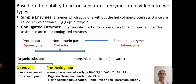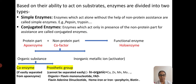Based on their ability to act on substrates, the enzymes can be divided into two major types: simple enzymes and conjugated enzymes. Simple enzymes are those where only the protein part — the apoenzyme — is involved in the catalytic activity. In conjugated enzymes, the apoenzyme takes the assistance of a non-protein part called the prosthetic group.